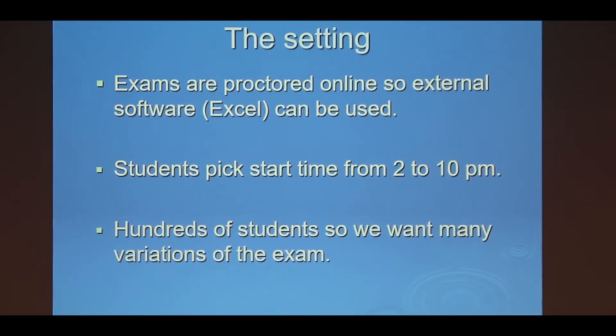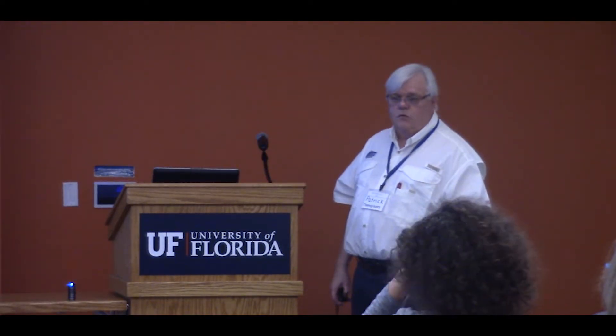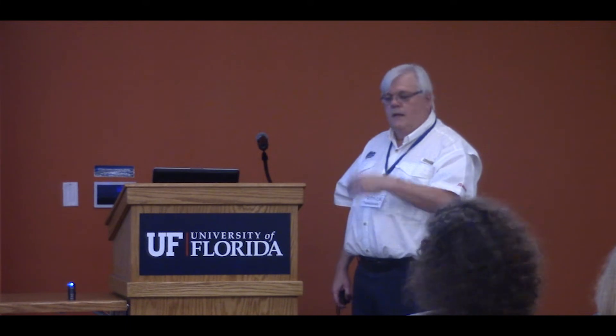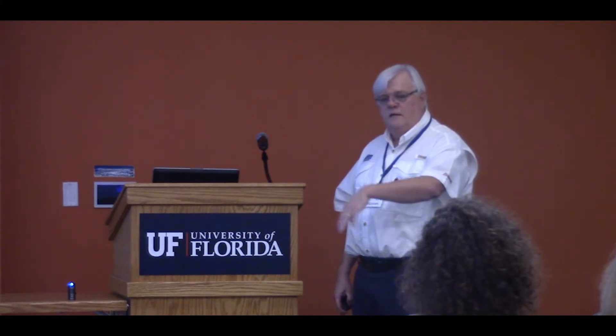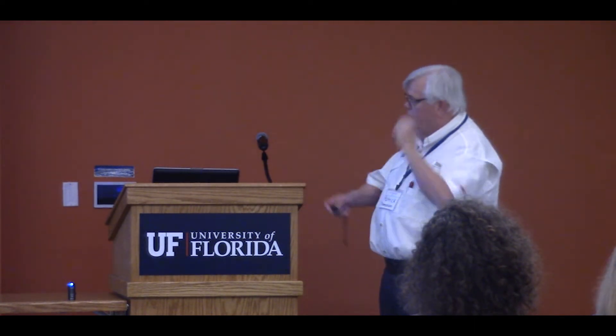The person that took the exam at 2 isn't going to get the same exam that the people at 5 and 8 get. So the way you do this is take advantage of some of the things that Canvas will do for you that allow you to randomize. You can randomize by putting things in a question bank and then picking questions from it. Each question can be randomly generated according to various strategies.